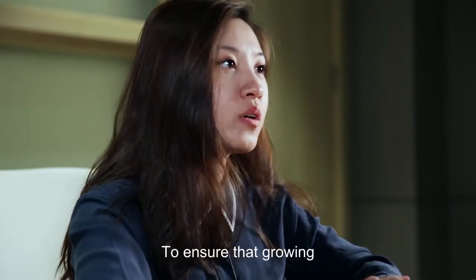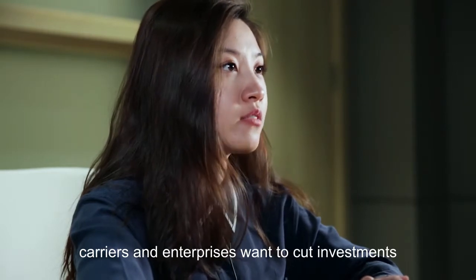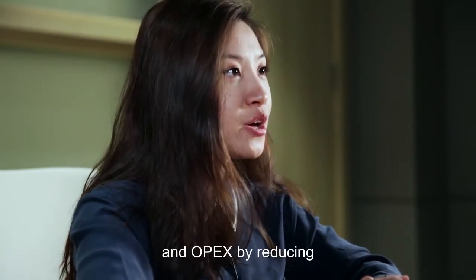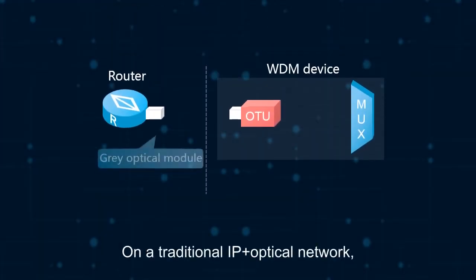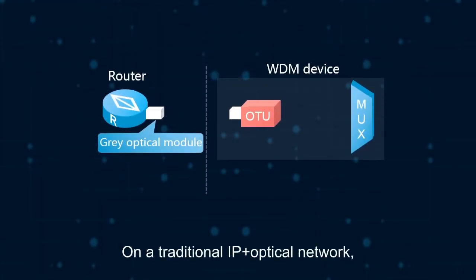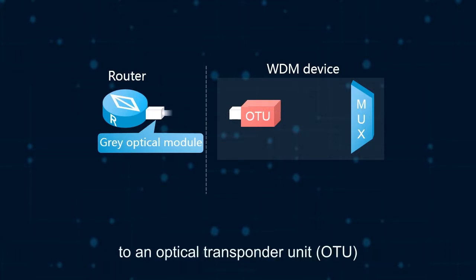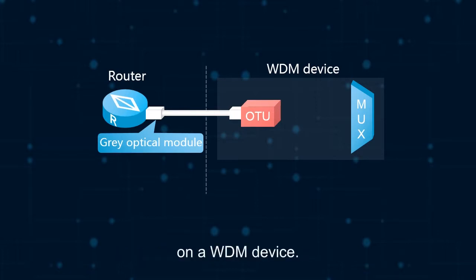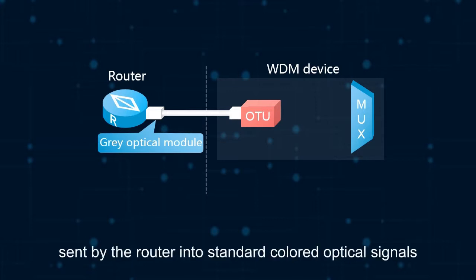To ensure that growing traffic volumes are translated to increased revenue, carriers and enterprises want to cut investments and OPEX by reducing the number of devices on their networks. On a traditional IP plus optical network, the gray optical module of a router connects to an optical transponder unit, which is OTU, on a WDM device.